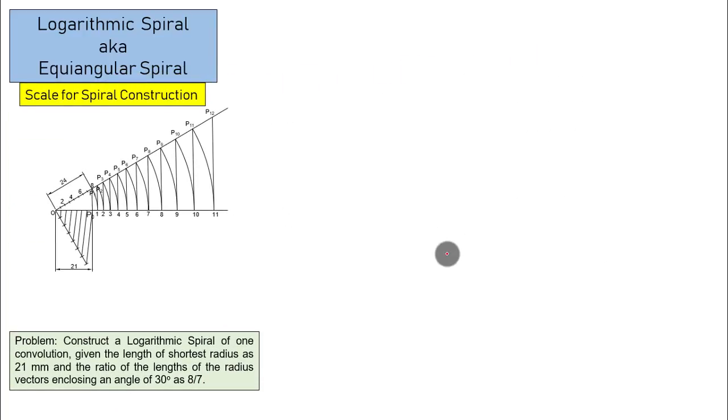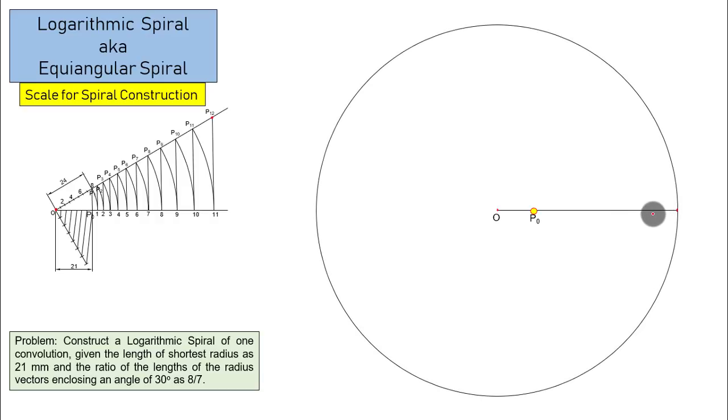So the first thing is op0 initial radius vector. How far? This is 21 millimeters far. Then the largest radius vector that we'll have is this one. So keep one leg of your compass at o, other leg at p12. And with that much amount from here to this point, with that much amount as the radii, cross circle. Now it was given to us that two consecutive radius vectors subtend an angle of 30 degrees in between them.